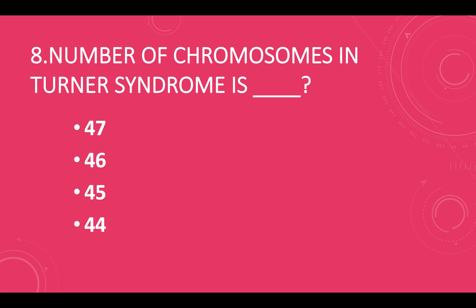Number of chromosomes in Turner syndrome is: option A — 47, option B — 46, option C — 45, option D — 44. Answer: option C, 45.